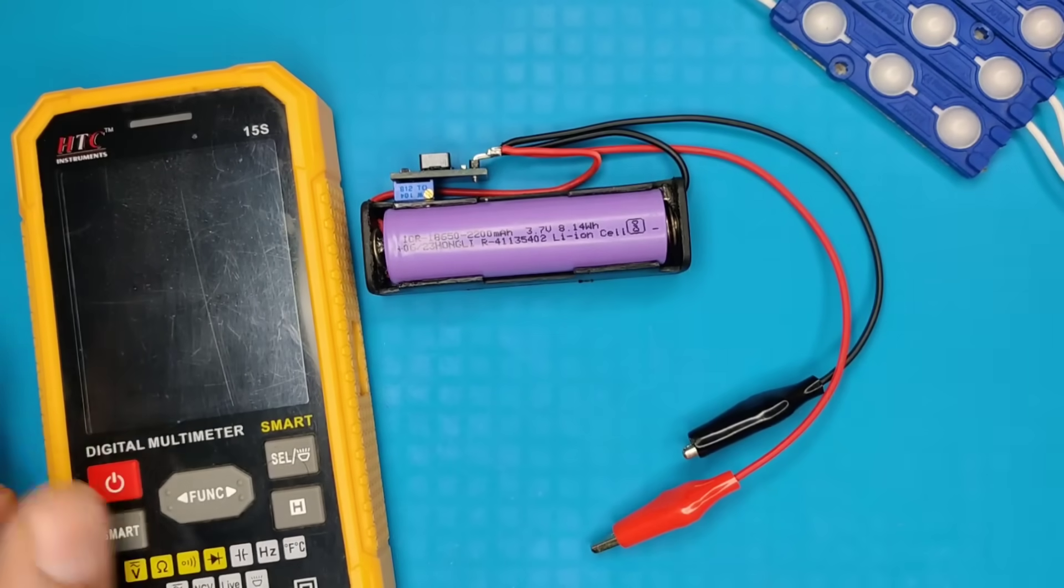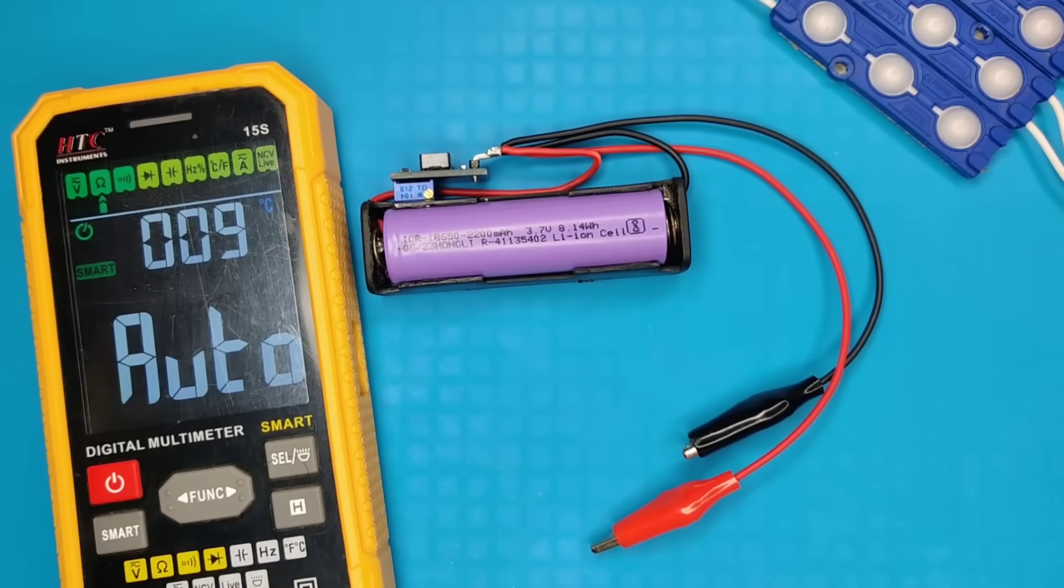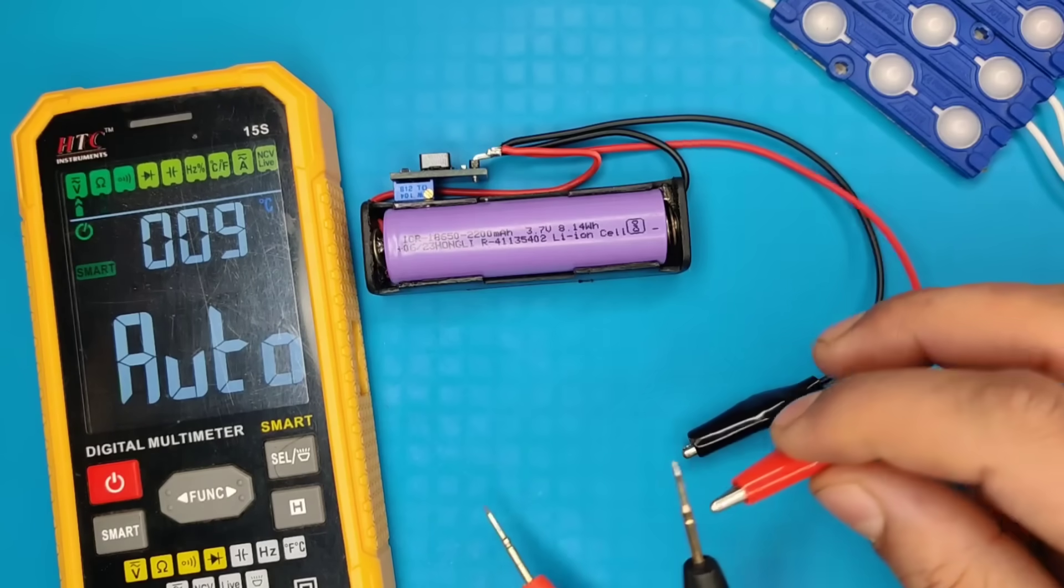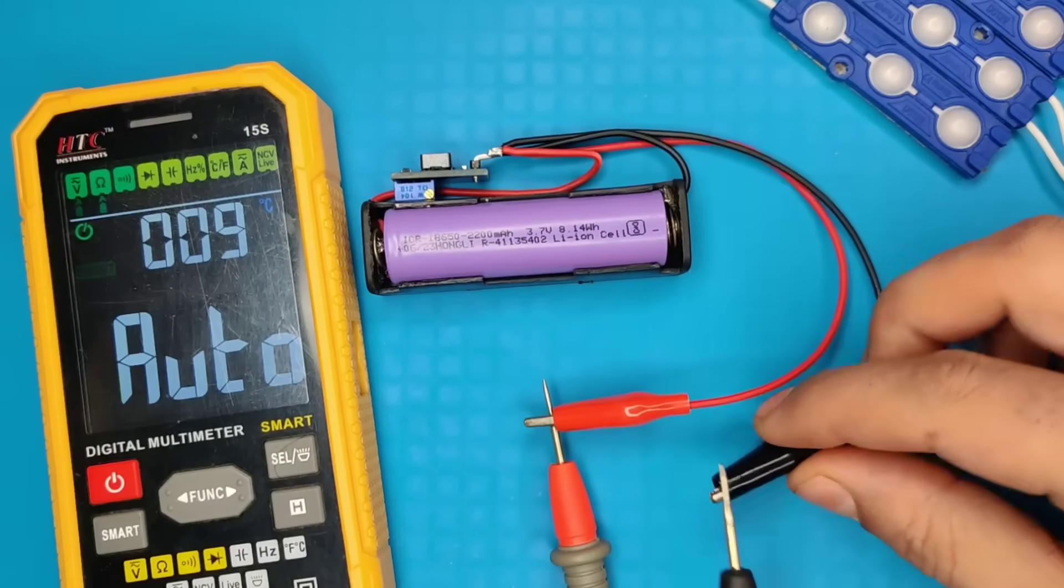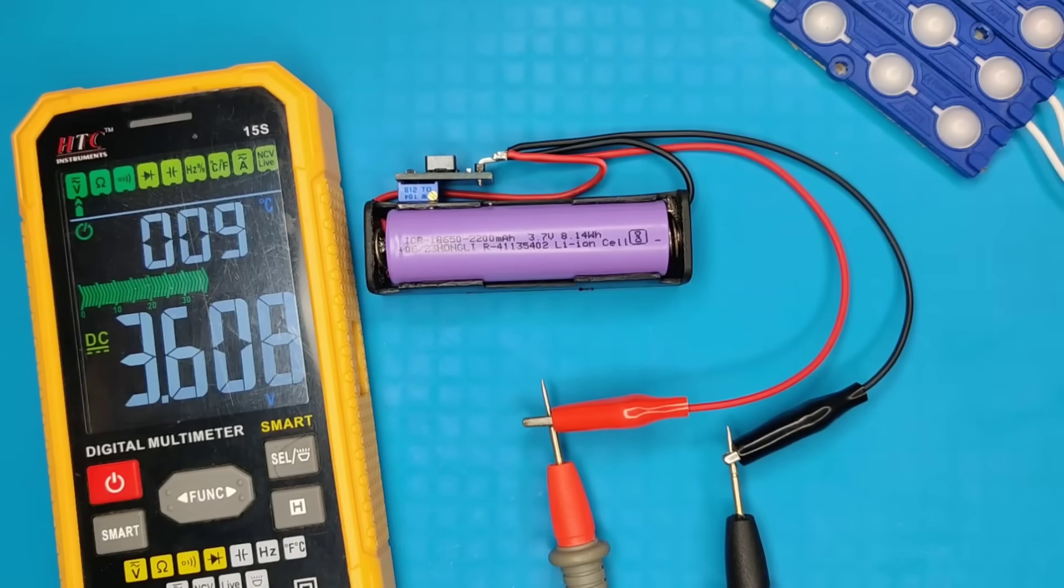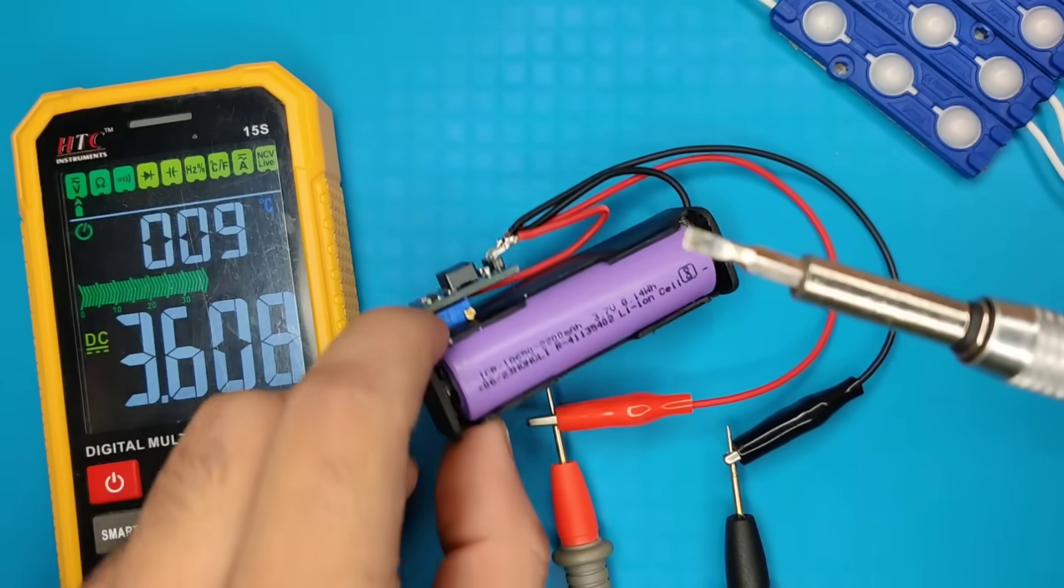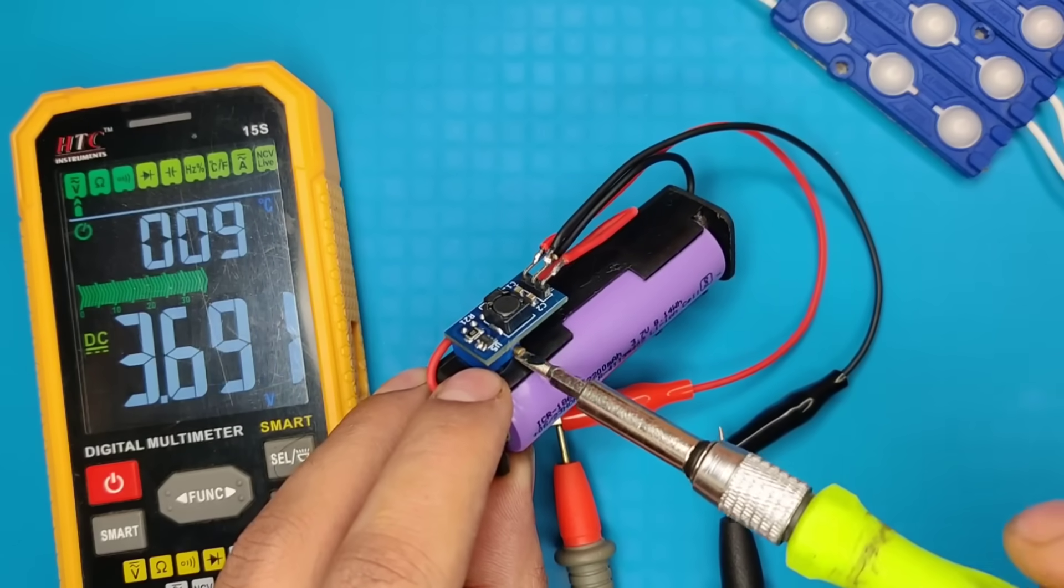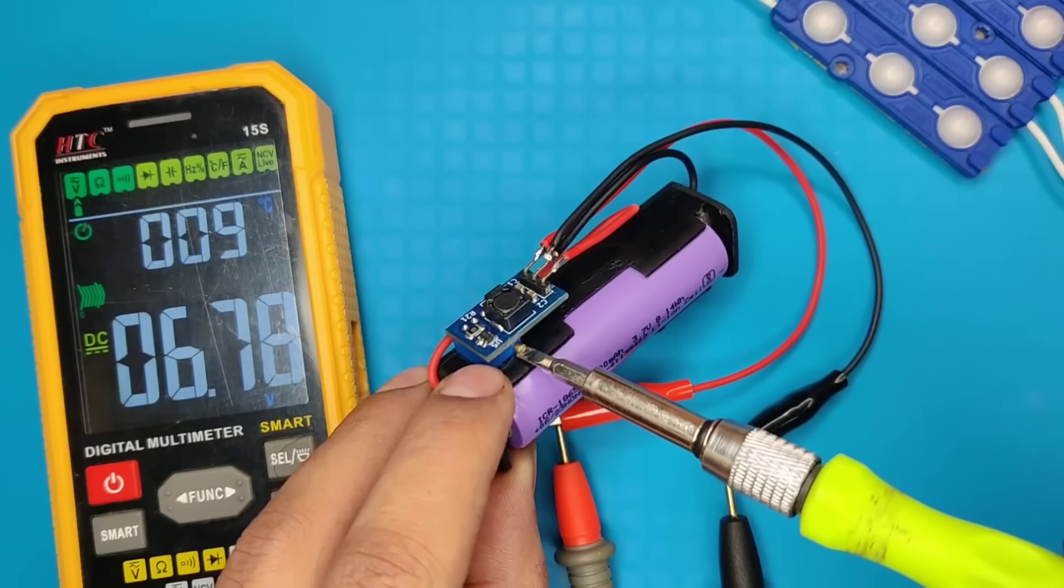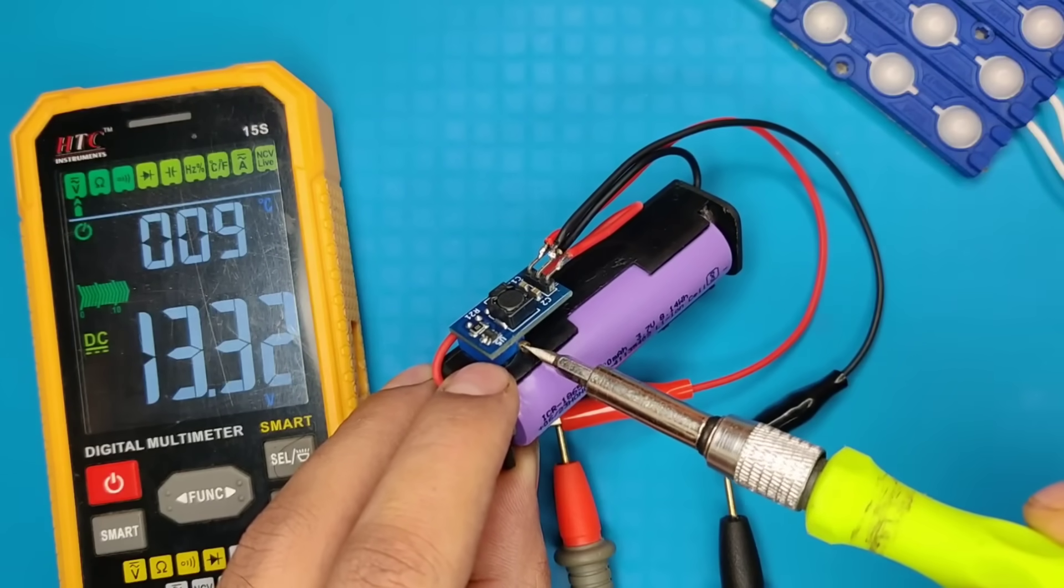Now use the multimeter and connect with the output clip wires. As you can see output voltage is only 3.6 volts. Use the screwdriver and rotate the potentiometer anti-clockwise that will boost output voltage. Now set output voltage at 12 volts.